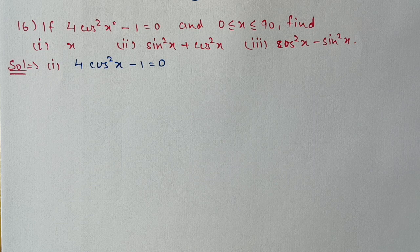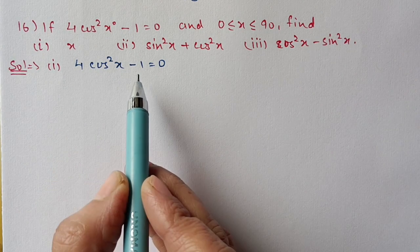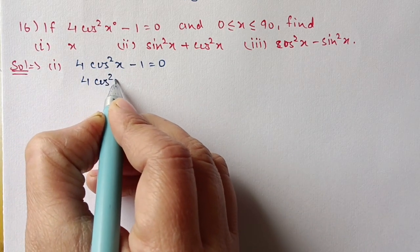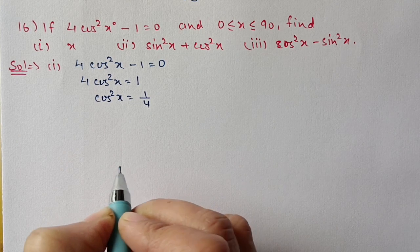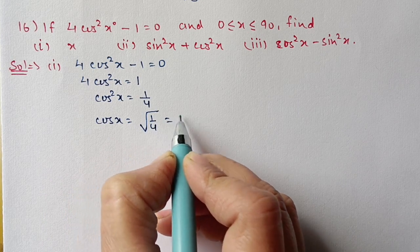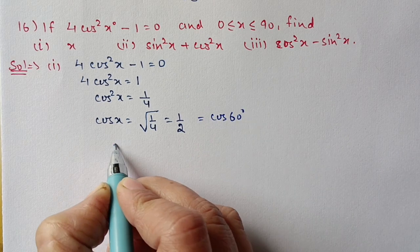Question 16: If 4 cos squared x minus 1 equals 0, and x is between 0 and 90 degrees, find the value of x, sin squared x plus cos squared x, and cos squared x minus sin squared x. First we find x. Shifting 1 to the other side: 4 cos squared x equals 1, so cos squared x equals 1 by 4. Taking the square root: cos x equals 1 by 2, which is the value for cos 60 degrees, so x equals 60 degrees.